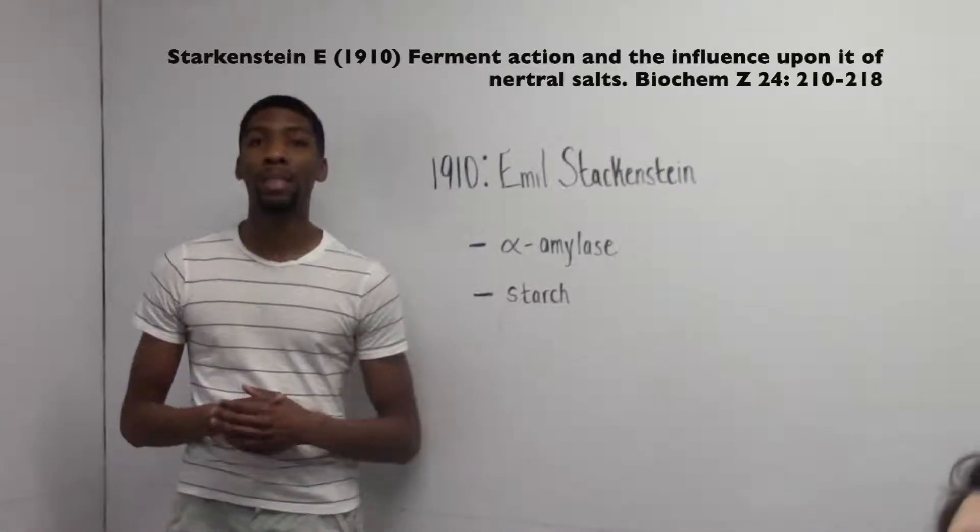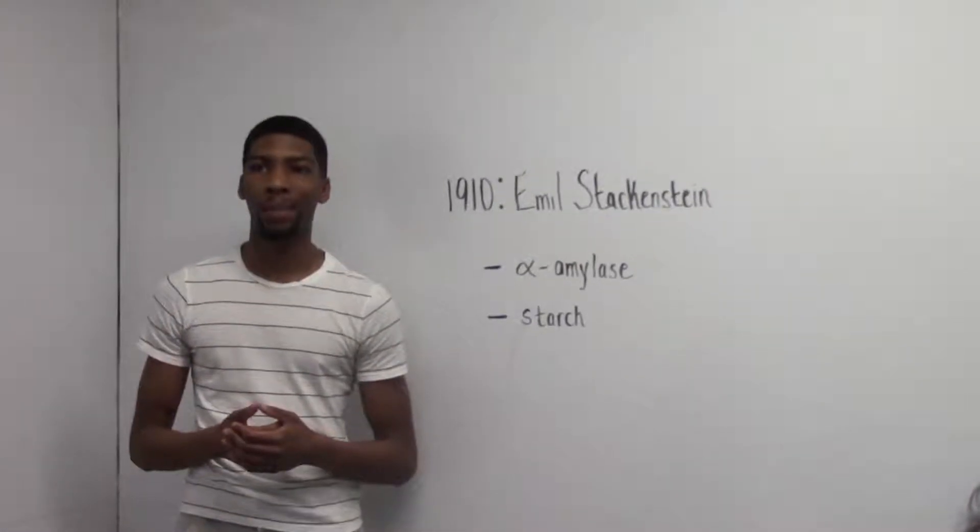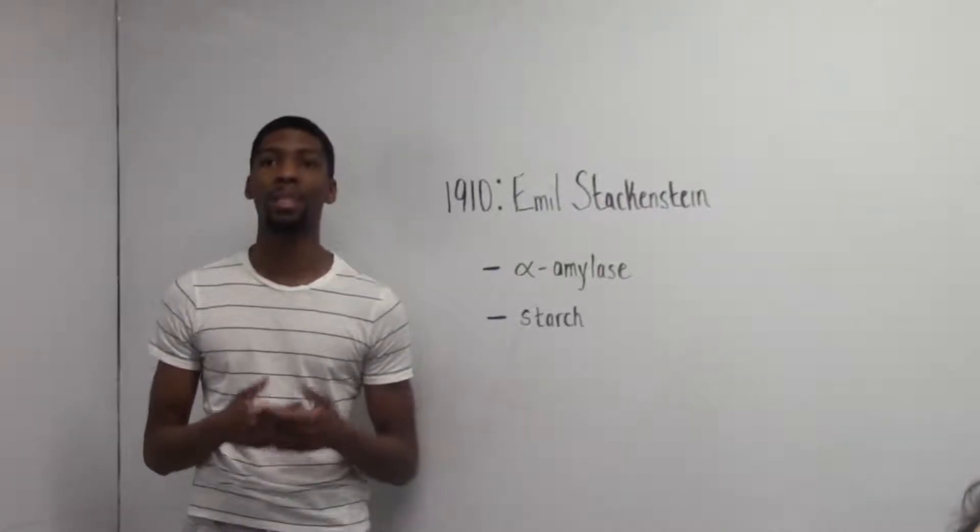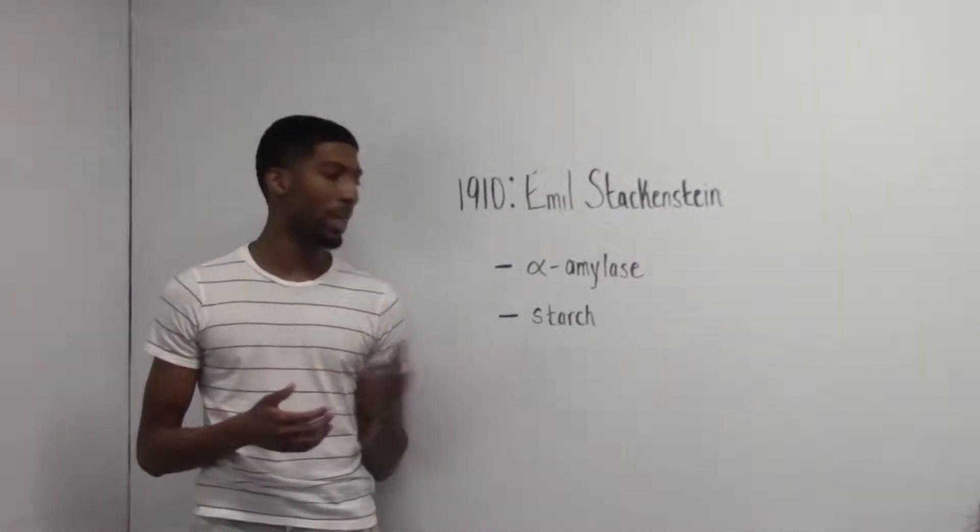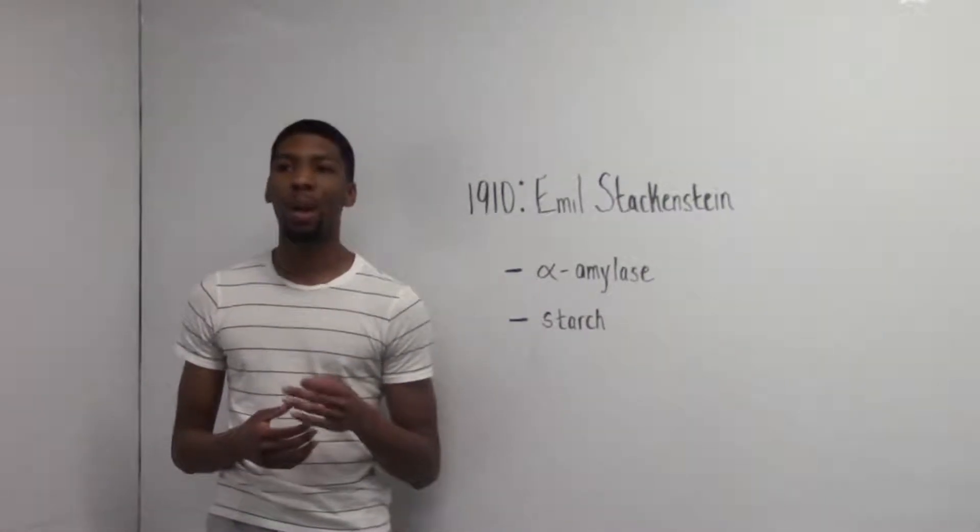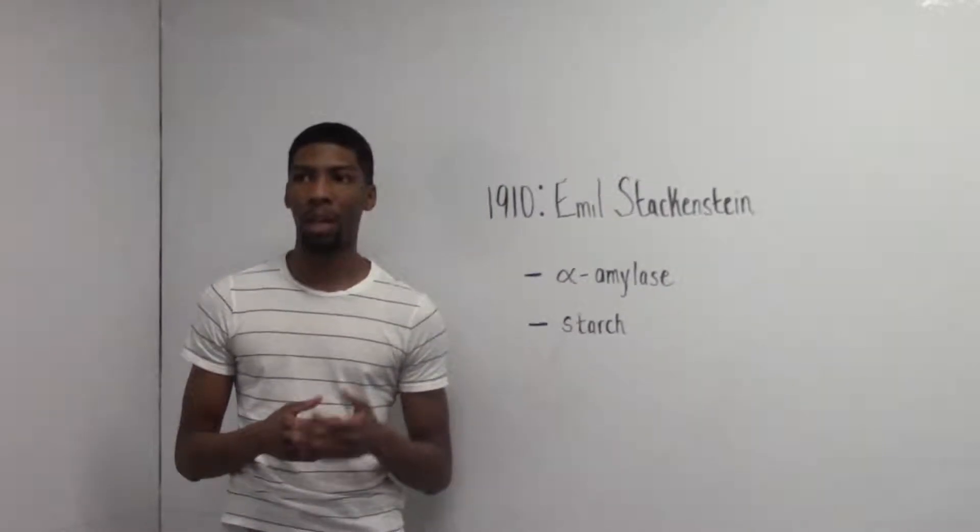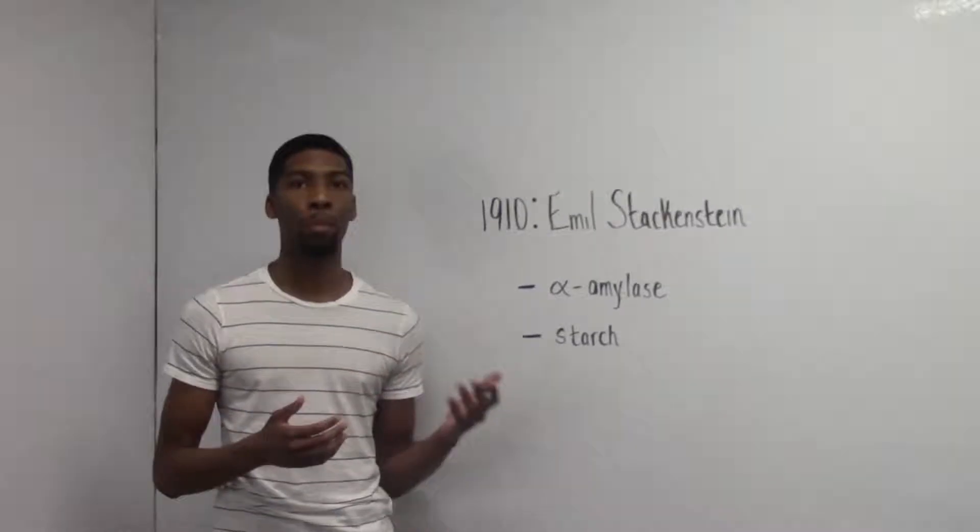The first example of affinity chromatography to be documented was developed by Emil Starkenstein in 1910. He utilized the natural interactions between the enzyme alpha amylase and the substrate starch to create a column that bound alpha amylase to insoluble starch. Not only was this the first example of affinity chromatography, but also one of the earliest examples of a separation in which liquid chromatography was used with an enzyme or a protein.